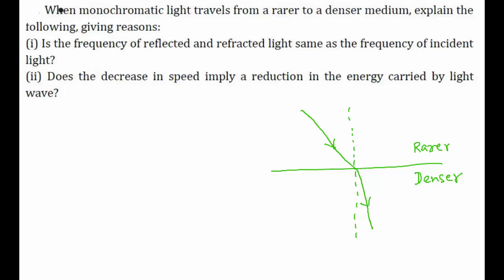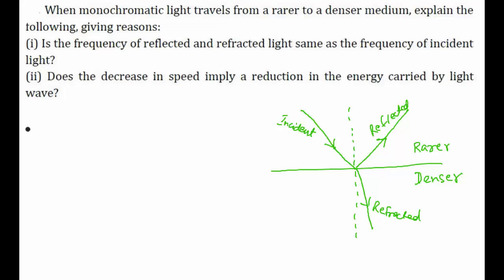We have to explain: is the frequency of the reflected and refracted light the same as the frequency of the incident light? Some part of the light will be reflected. This is the incident light, this is the reflected light, and this is the refracted light. So the first part asks whether the frequency of reflected and refracted light is the same as the frequency of incident light.